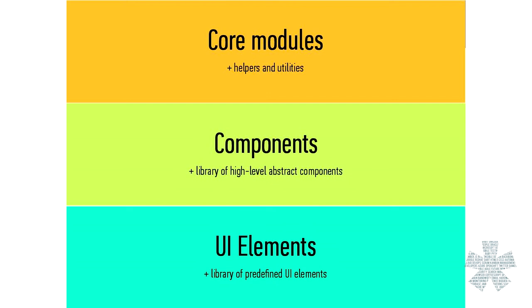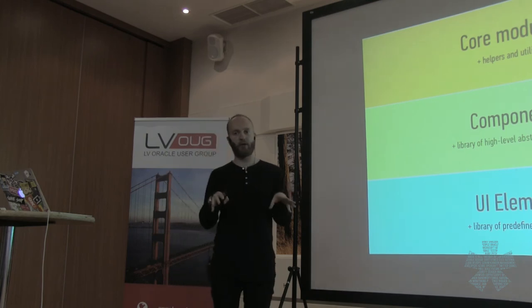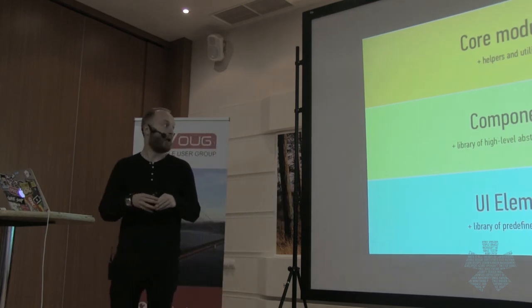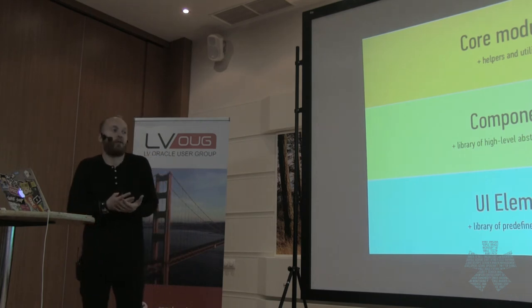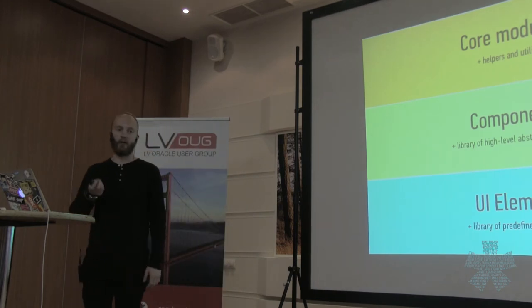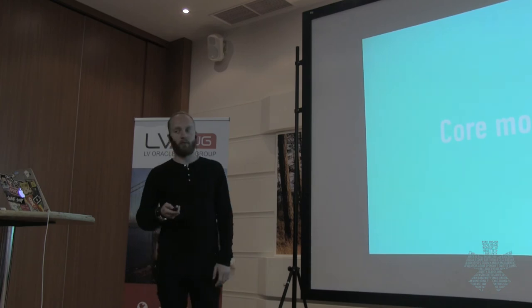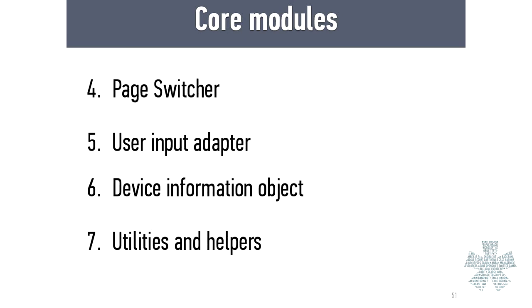For the solution, we have three parts. The second part is components that will be reusable. The third one is to fill the gap between all the browsers that don't have range, or for example if I want to make a toggle button like on iOS. In the core modules we will have a script loader, interfaces or classes for component view model, and additional stuff like device information and user input adapter.